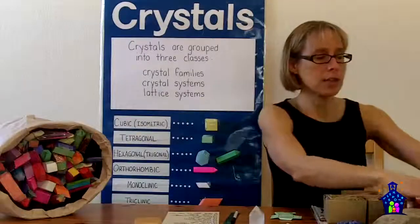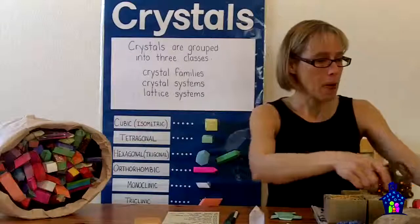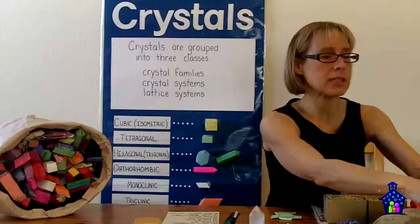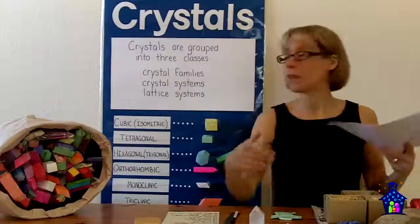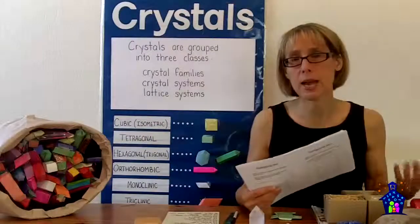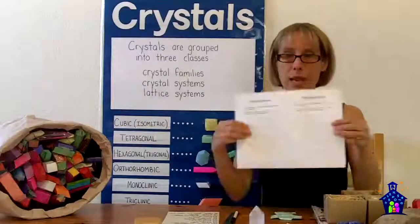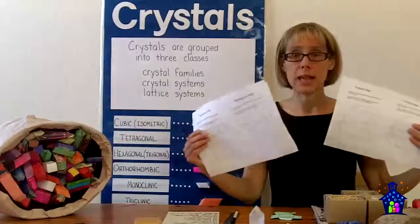Then depending on your facility and where your table is located you may need an extension cord. And then of course you're going to need the nets. Now the net is the two dimensional representation of the three dimensional crystal. So on our website at familymathnight.com under the resources section you can get the PDFs of each one of these nets.